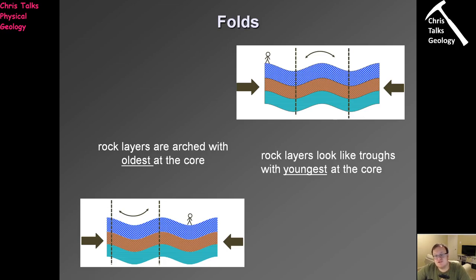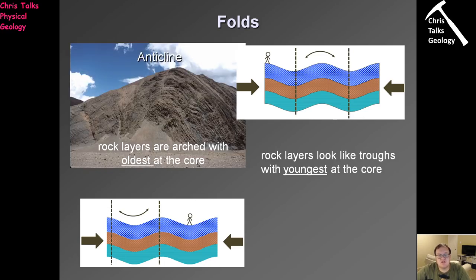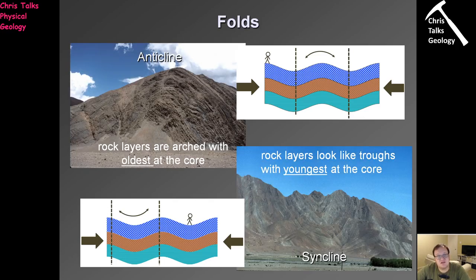In terms of ductile deformation, there are three structures we can form: anticlines, synclines, and monoclines. Anticlines have an arch shape, with the oldest layers of rock in the middle and the youngest on the outside. Synclines, on the other hand, have the youngest layers of rock in the middle and the oldest on the outside, forming a trough morphology.